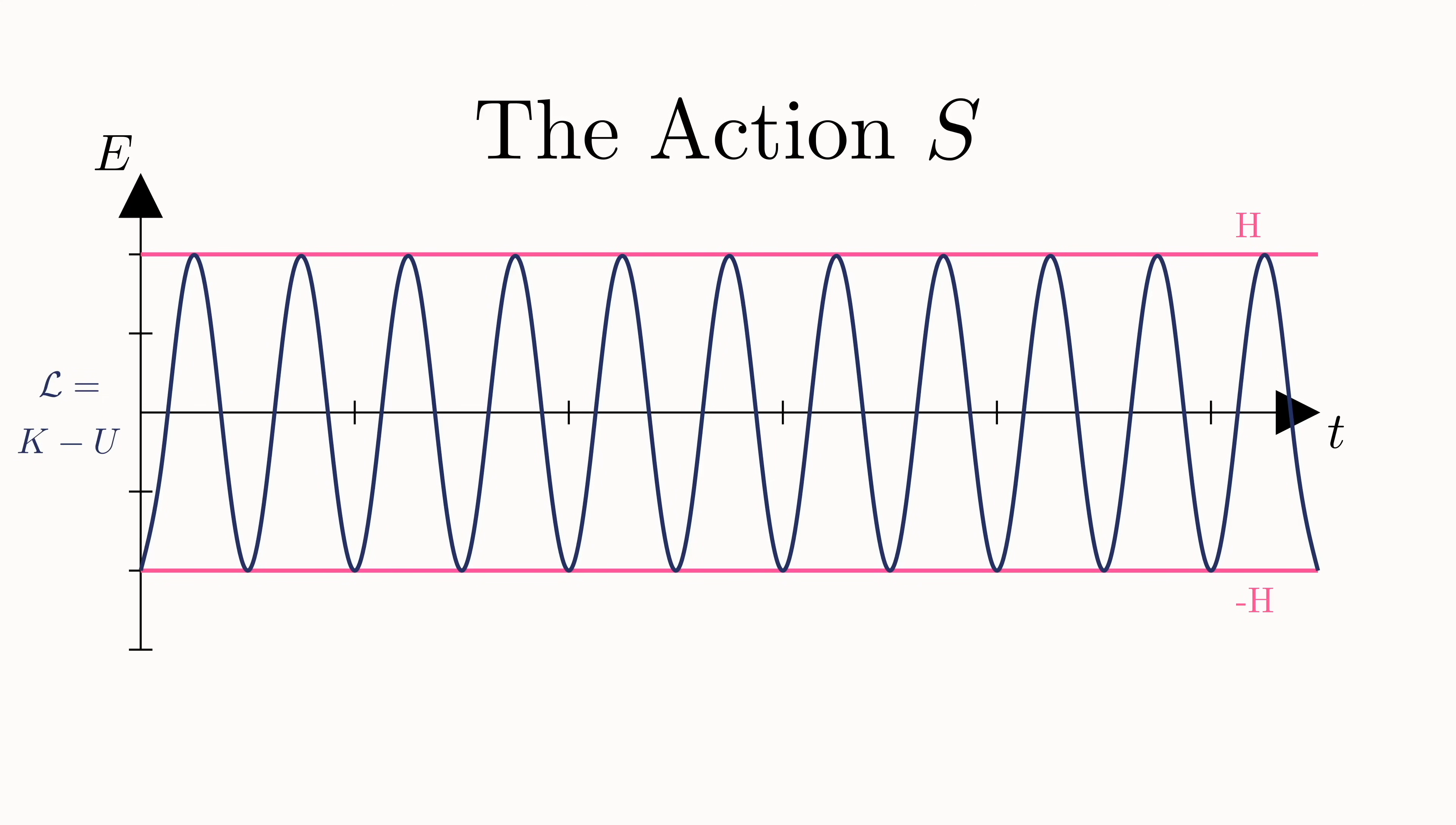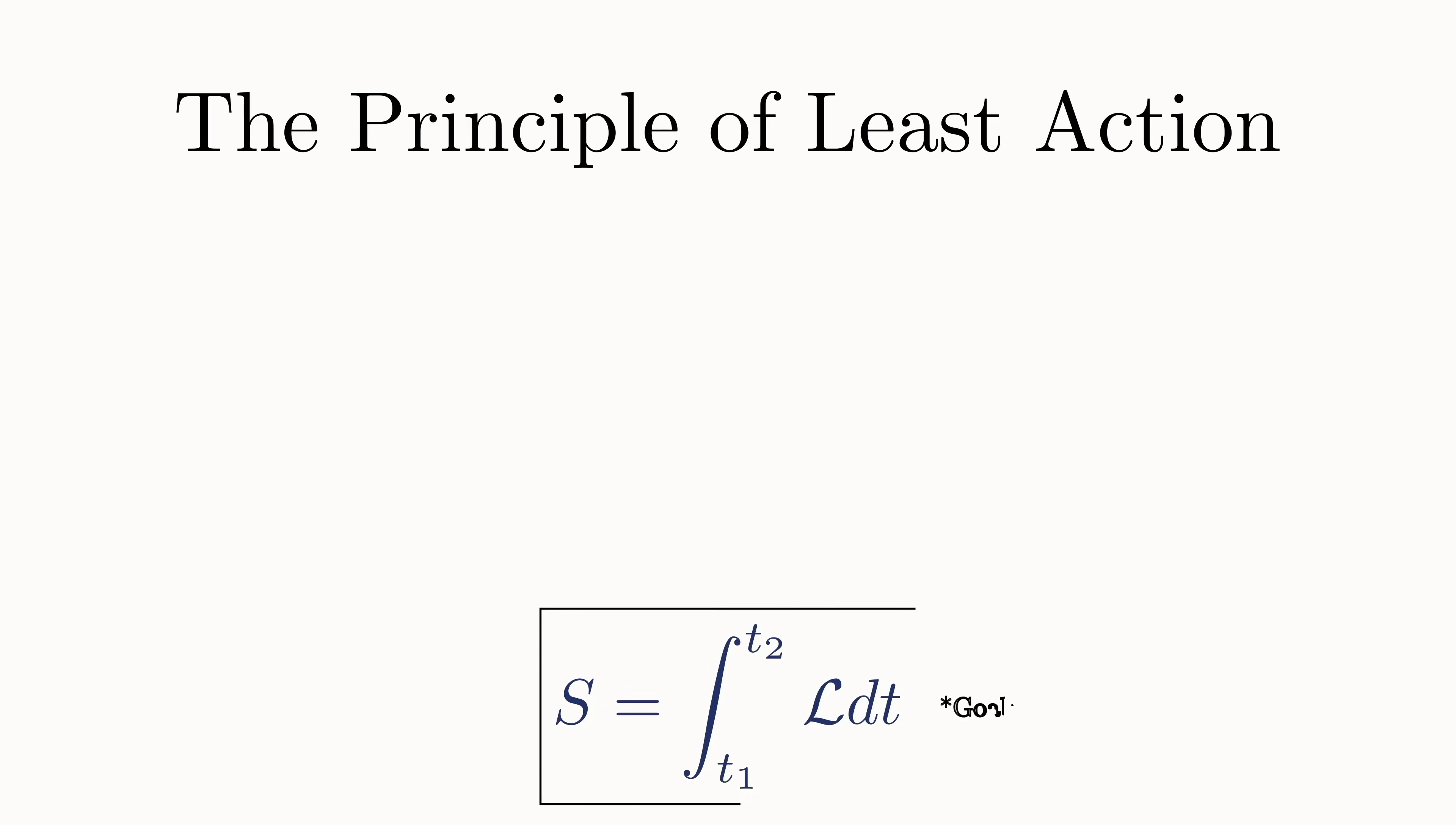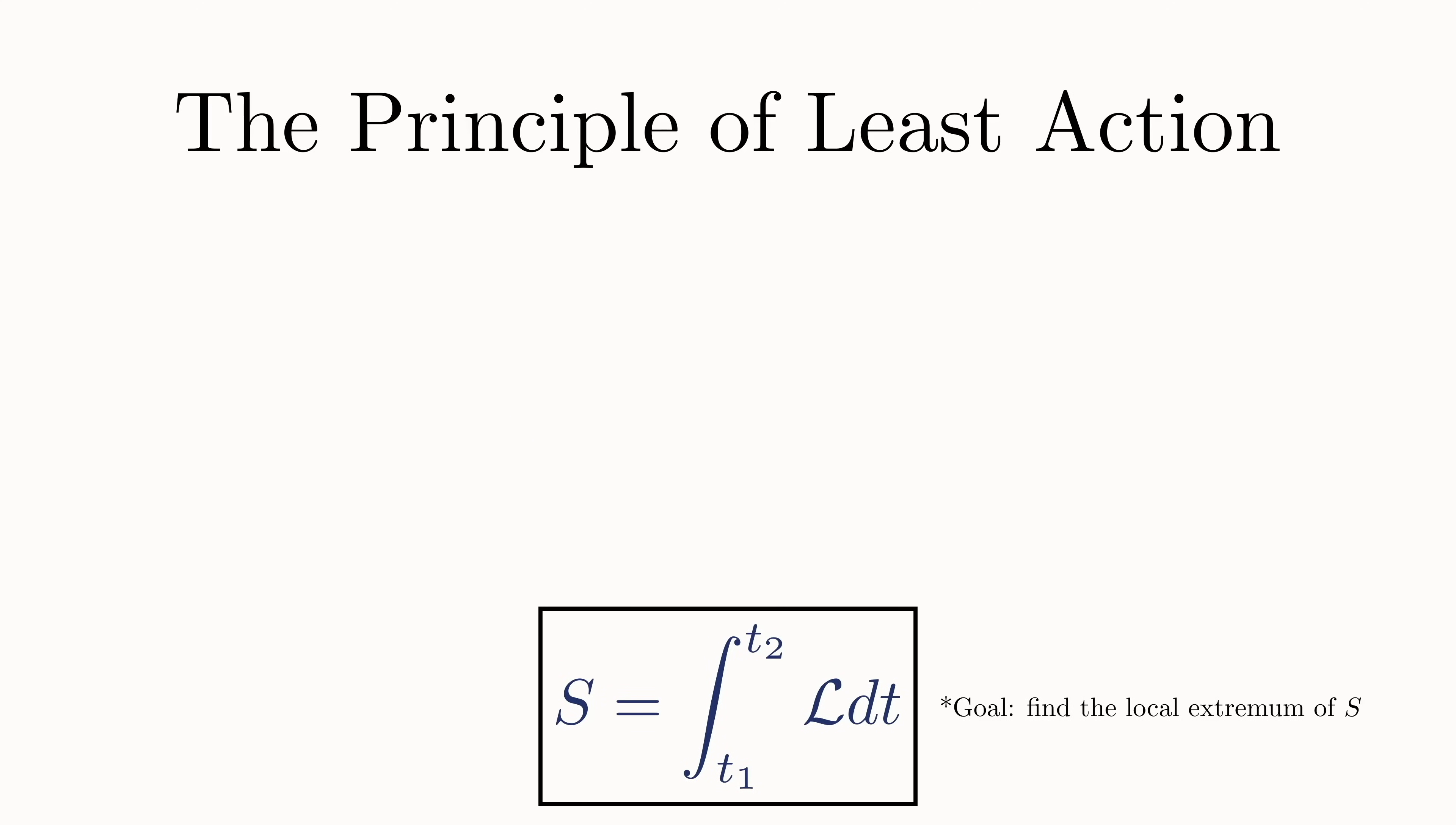The action is defined as the integral of the Lagrangian over some time interval, which means that in this graph, it's simply the area under the curve for whatever time interval we happen to be considering. We are now ready to apply one of the key principles in all of physics, namely the principle of least action. I won't go into detail about this since it really deserves its own video, but essentially the principle of least action says that of all possible paths that an object can take, the one that it will always take is the one that minimizes, or rather extremizes, the action.